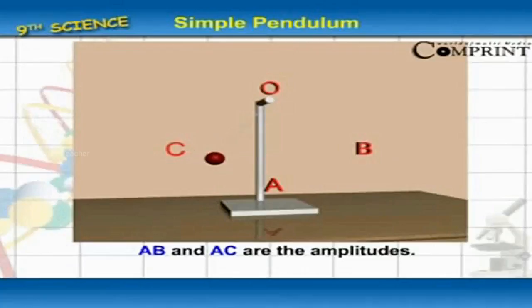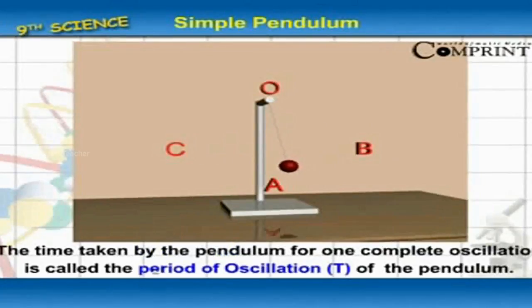AB and AC are the amplitudes. The time taken by the pendulum for one complete oscillation is called the period of oscillation T of the pendulum.